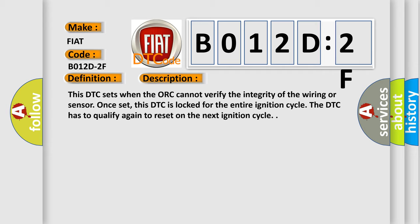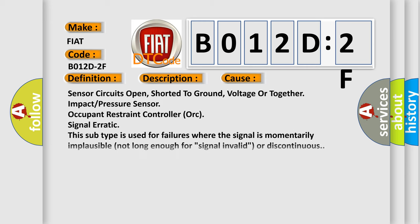This diagnostic error occurs most often in these cases: sensor circuits open, shorted to ground, voltage or together impact pressure sensor occupant restraint controller ORC signal erratic. This subtype is used for failures where the signal is momentarily implausible, not long enough for signal invalid or discontinuous.